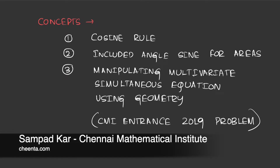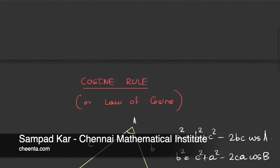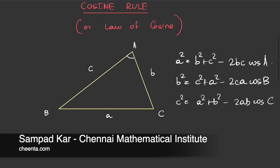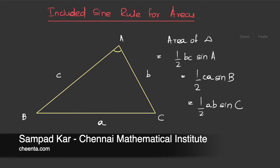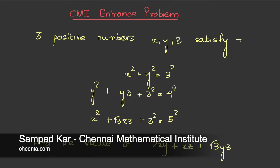Hello. Today we will be learning a new way to solve multivariate simultaneous equations using geometry. We will be learning about the cosine rule as well as the included sine formula for calculating the areas of a triangle, and we will be doing this with the help of a 2019 CMI entrance problem.